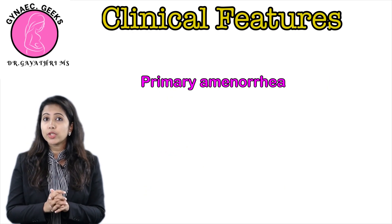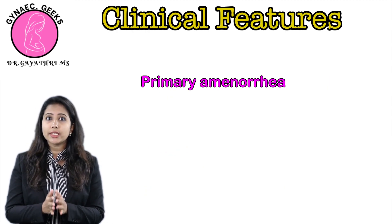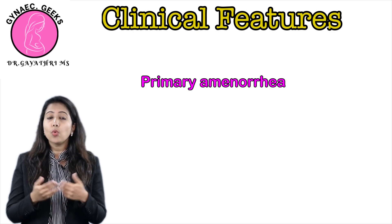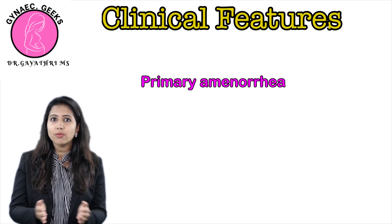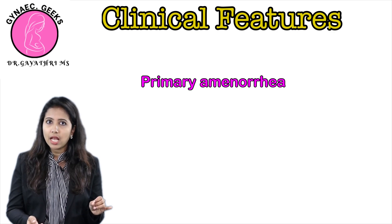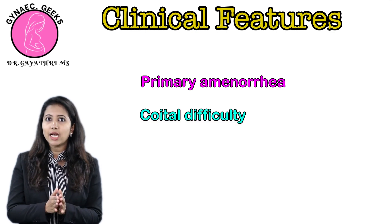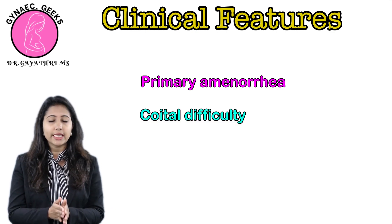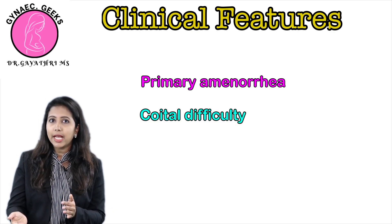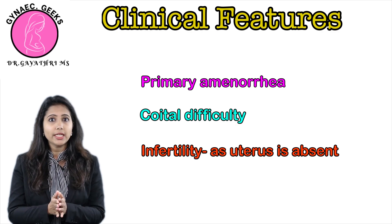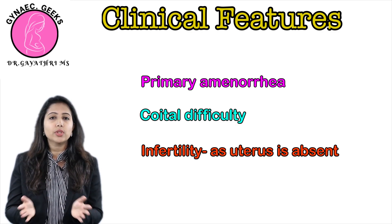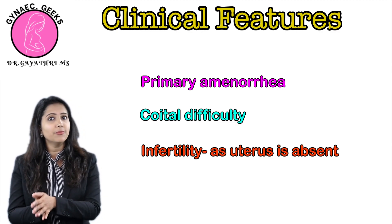These women usually present during the time of menarche. As they don't have a uterus, there won't be any menarche, so they have amenorrhea. As the vagina is short, they can have coital disturbance. Along with that, they are unable to conceive, so they will have infertility.